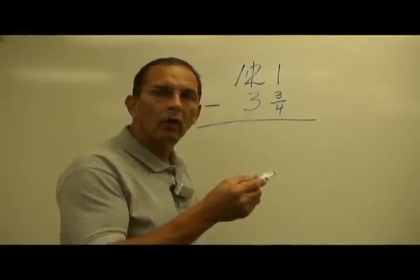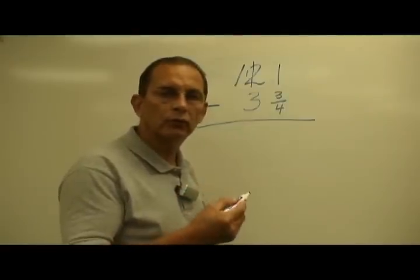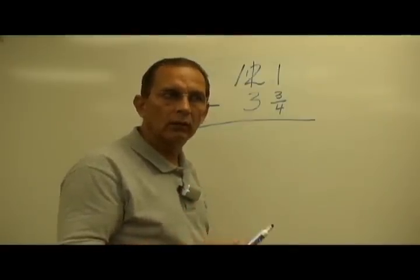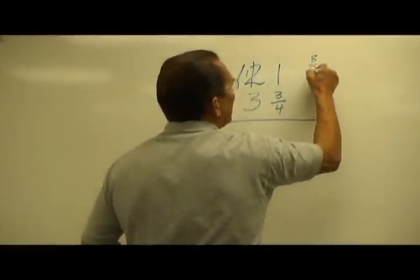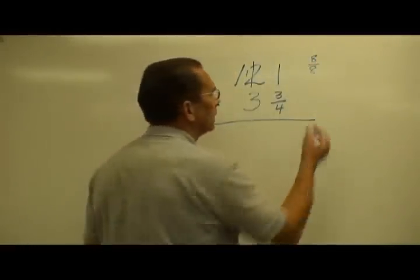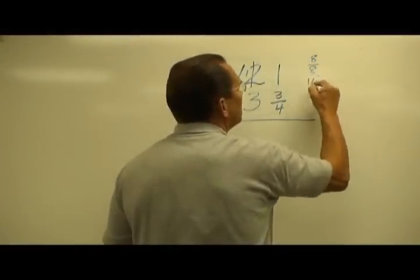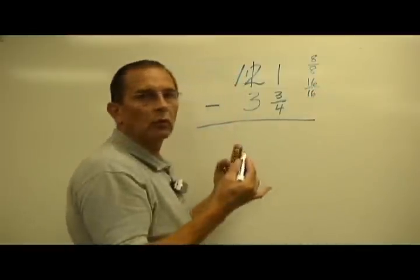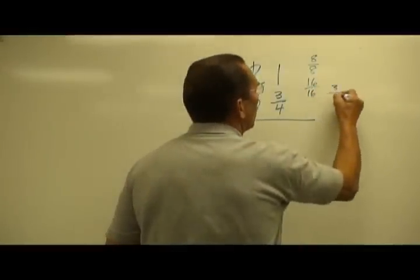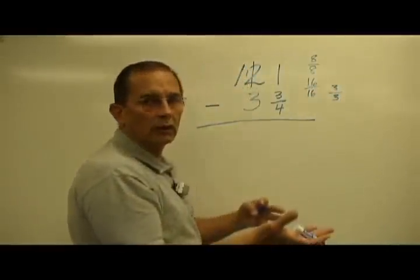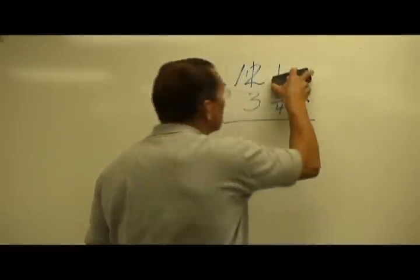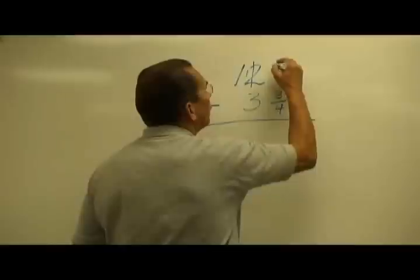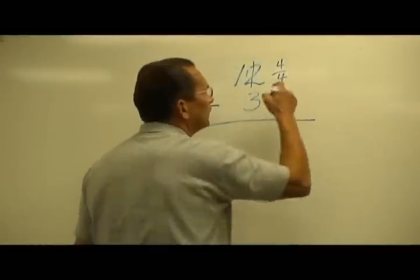Any number over itself is equal to 1. For instance, 8 over 8 is equal to 1. 16 over 16 is equal to 1. 3 over 3 is equal to 1. Well, if that's the case, 4 over 4 is equal to 1.